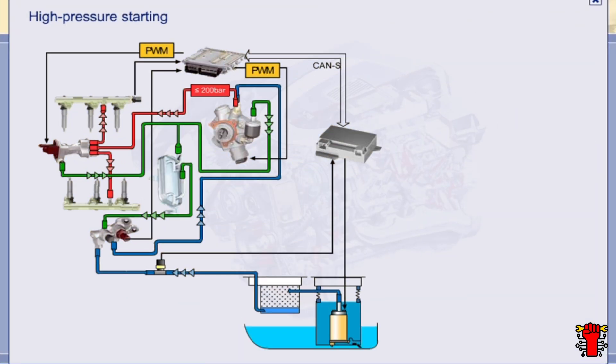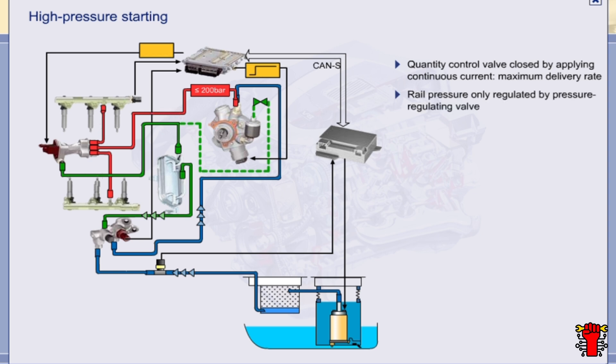The high-pressure starting operating status prevails up to approximately five seconds after engine start. In high-pressure starting conditions, the quantity control valve is closed by applying a continuous current. The high-pressure pump can therefore supply fuel at the full delivery rate, which enables pressure to be built up quickly. In high-pressure starting conditions, the rail pressure is regulated exclusively by the pressure regulating valve.